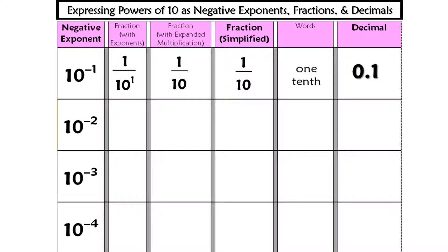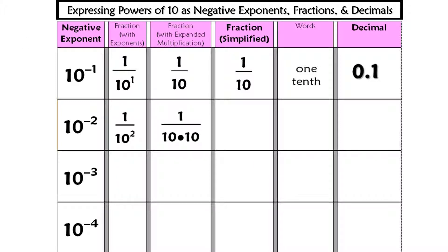Let's take a look at that second negative exponent term. 10 to the negative second — remember, is not going to be a negative number; it's going to be a fraction or a decimal. So when we go to write it as a fraction, again, we're going to take that exponent term, put it in the denominator, make the exponent positive, and make the numerator 1. When we go to write that in expanded multiplication, what does 10 to the second power mean? It means 10 times 10. What is 10 times 10? It's 100. How do we say that? One hundredth. And how do we write it? 0.01.